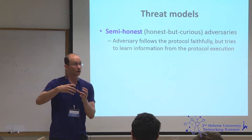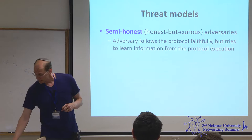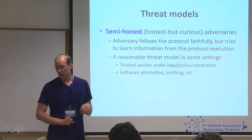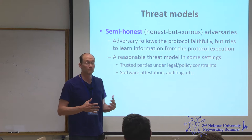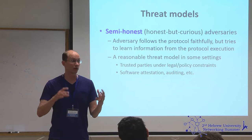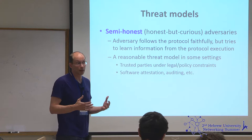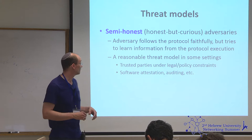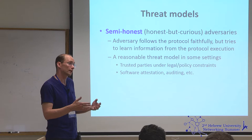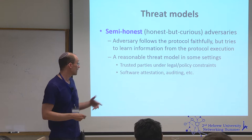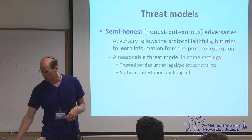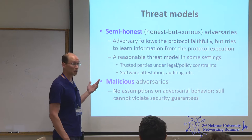This is a reasonable threat model in some scenarios — for example, doctors who you trust but who are legally constrained from giving patient records to other doctors. You trust them to run the software faithfully, but you may worry about someone who afterward compromises their machine, looks at the protocol messages, and learns some information. You can also use auditing or software attestation to guarantee people are running the correct code. The stronger notion is protection against a malicious attacker, where we make no assumptions at all — they can arbitrarily deviate from the protocol to try to break the security guarantees.